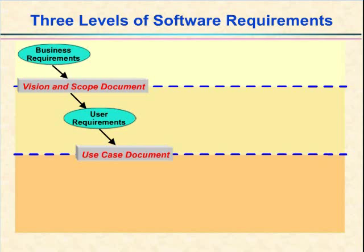I generally employ use cases as a tool to help reveal the functional requirements. So our third level of requirements detail is the functional requirements. You don't implement business requirements. You don't implement use cases or product features. Developers implement specific bits of functionality. And if you implement the right set of functionality, then people can perform the use cases that are important to them. So the functional requirements that you need to implement are those that will let users get their jobs done. In Module 9, I will talk more about the use case technique and how to derive functional requirements from the use case descriptions.